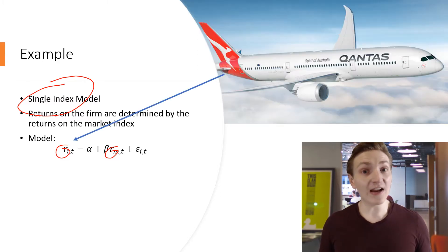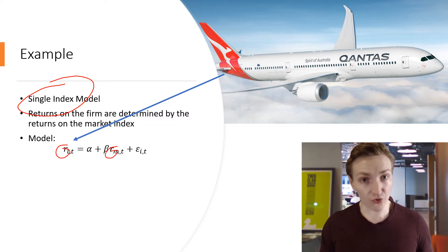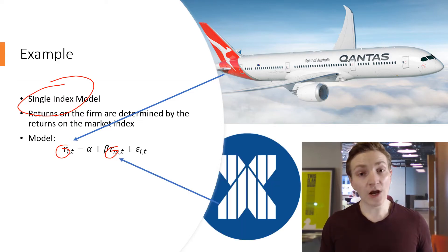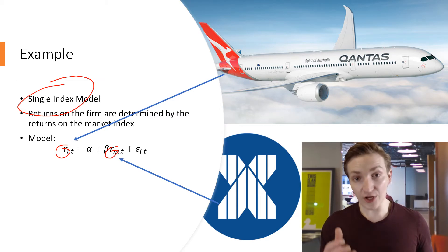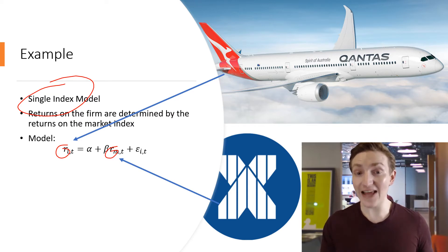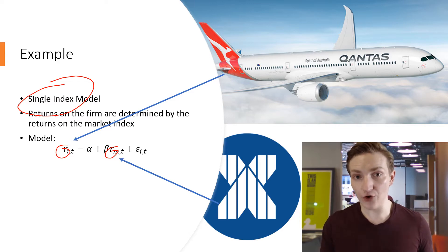As one example, we might have a firm like Qantas, which is an airline based out of Australia. Qantas will have stock returns, and those stock returns might be deemed to be a function of the returns on the market index — for example, the Australian Securities Exchange. We can go and download data on this and then run that regression. I'm going to use data from Qantas and from the ASX in order to run and interpret that regression in Excel.